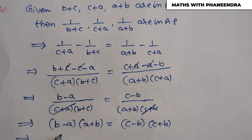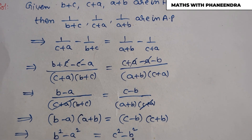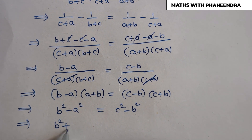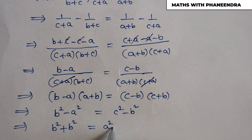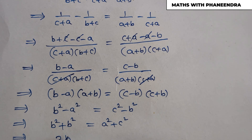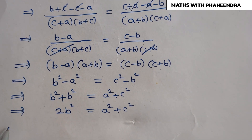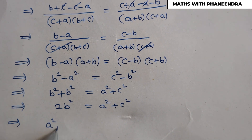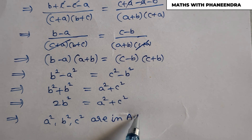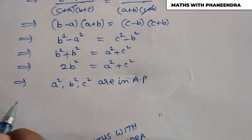This gives b²−a² = c²−b². Rearranging: b²+b² = a²+c², that is 2b² = a²+c². This shows that a², b², c² are in arithmetic progression, since the middle term satisfies the AP condition.